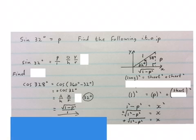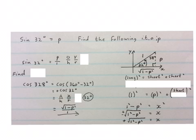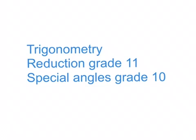If you don't understand how I got from cos 328 to plus cos 32, look at the video reduction trigonometry. Please stop the video and see if you can see what happened here. If you have trouble with reduction or special angles, just type on my channel trigonometry reduction grade 11, separate video, trigonometry special angles grade 10.